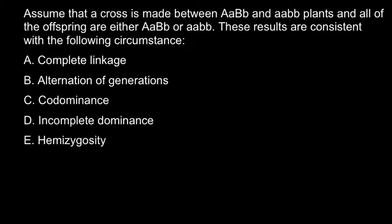Today's problem: assume that a cross is made between two plants. One plant's genotype would be heterozygous for two genes, and another plant's genotype would be homozygous recessive for two genes, gene A and B. All of the offspring are either the same genotype as parent 1 or the same genotype as parent 2. These results are consistent with the following circumstance, and here are the five answers to choose from.